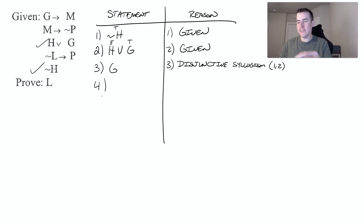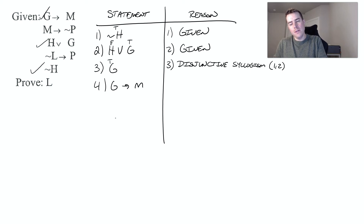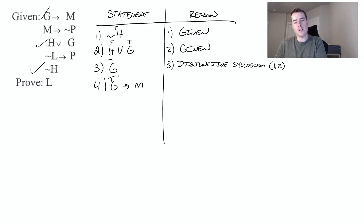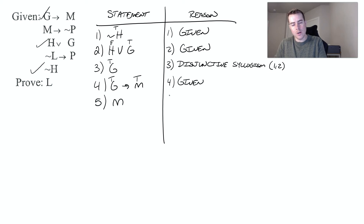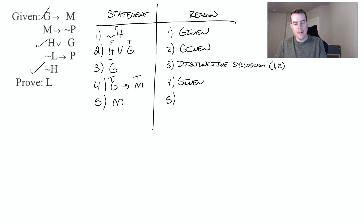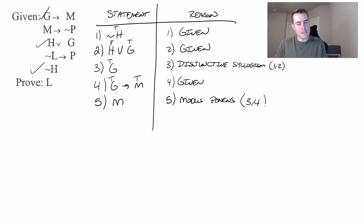Now we look for something else with G. I see the first line has G implies M. Since G is true and this is a conditional statement, the only way it's true is if both parts are true or the first part is false. Since G is true, M must be true. That was our given statement, and we conclude M is true — that's modus ponens, also called detachment. This is from lines three and four.